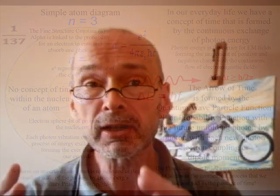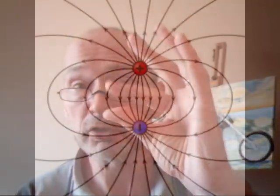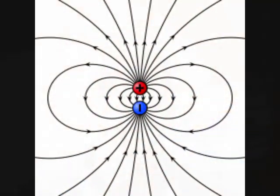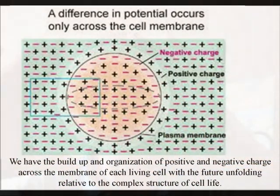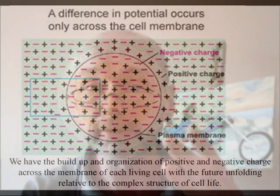The light photon forms the movement of positive and negative charge, and whenever objects touch it is charge that makes contact. Also we have the build-up and organization of charge relative to the membrane of each living cell within us.